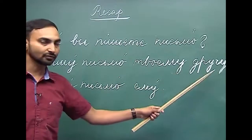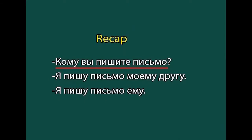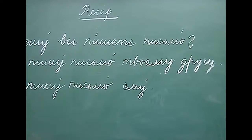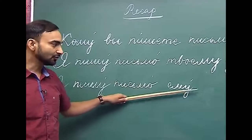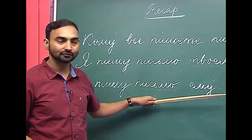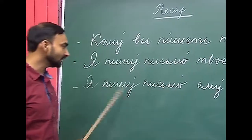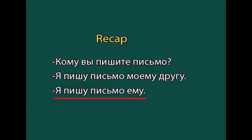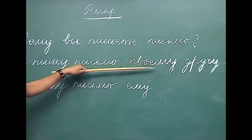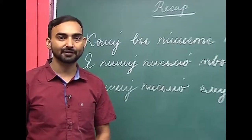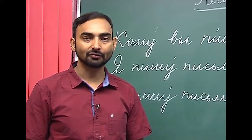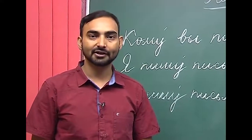Here, pismo is the direct object and tvoimu droogu is the indirect object. If we use a personal pronoun instead of the noun, we say ya pishu pismo yemu — yemu denotes the personal pronoun 'on' (he) in the dative case, meaning I am writing a letter to him. So nouns, possessive pronouns, and personal pronouns all decline in the dative case. In this lesson, we will discuss more topics related to the dative case.